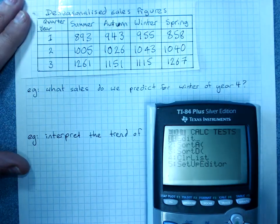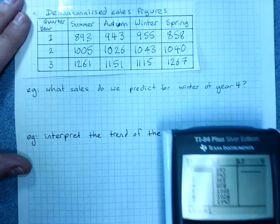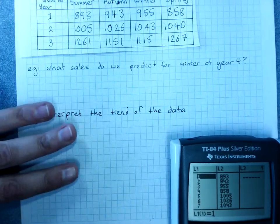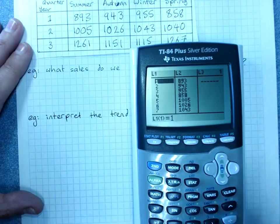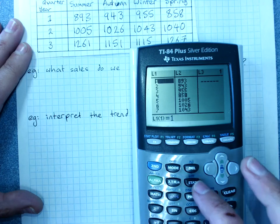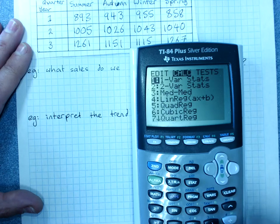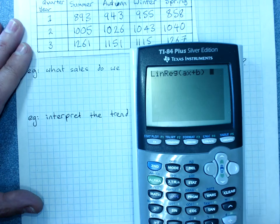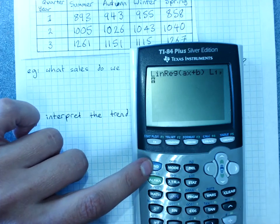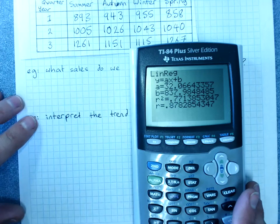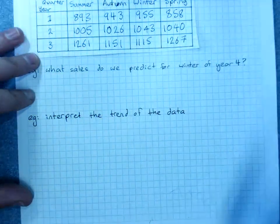You'd put that in your stat edit table. Now I'm actually going to start with getting the trend line because we'll need the trend line to get the sales. So for the trend line, make sure you've got catalogue on. L1, stat, calc, 4 for linreg, L1 and L2. Y variables if you want to use the line later, and get the equation of the line.